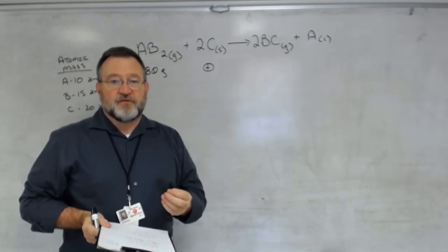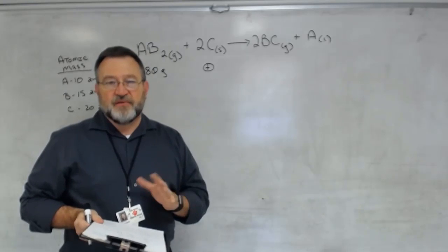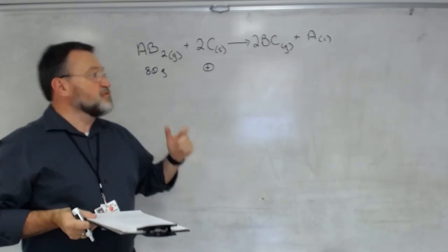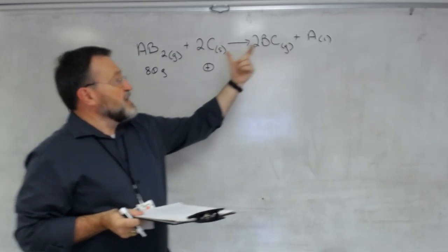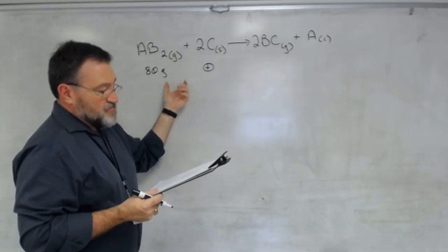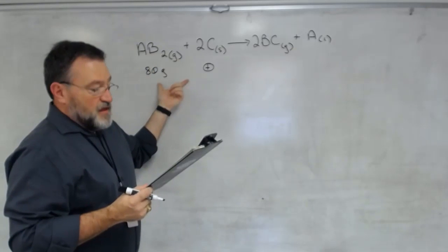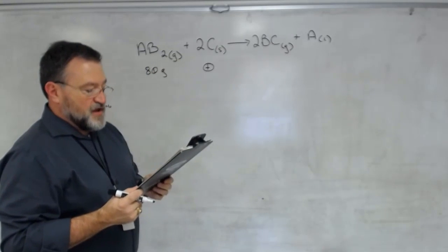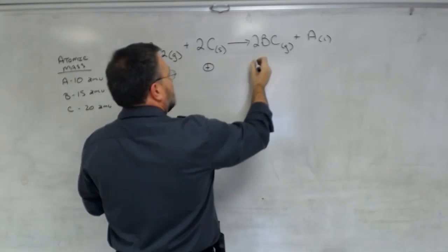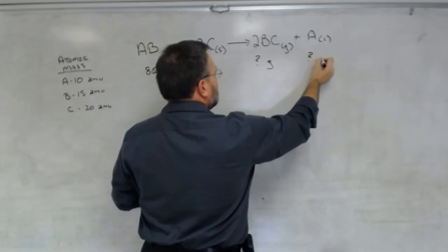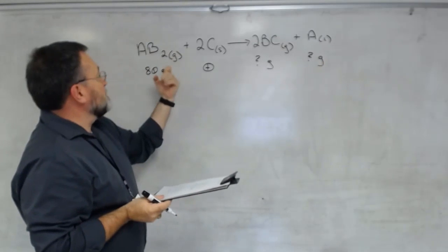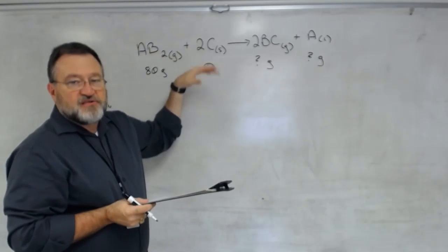AB2, by virtue of the fact that it's not in excess, is the limiting reactant. It's always significant to look at the limiting reactant because it controls the reaction — as soon as that molecule runs out, the reaction stops. You can only produce as much product as the limiting reactant allows. So: if 80 grams of AB2 reacts with excess C, how many grams of each product are formed?